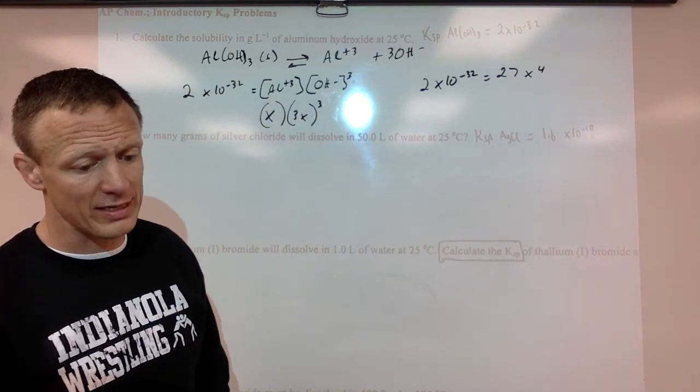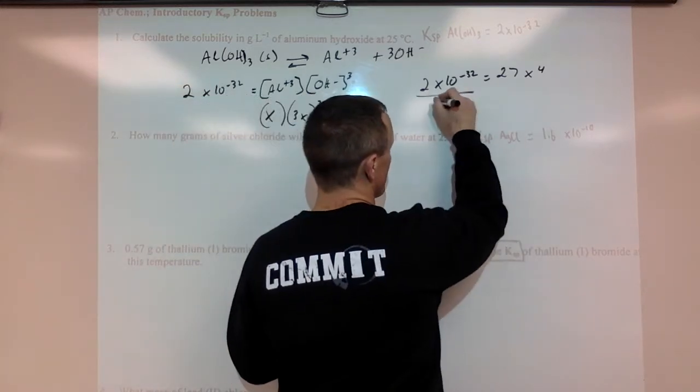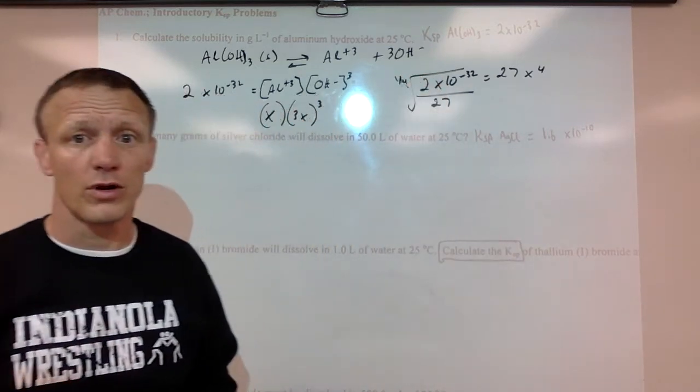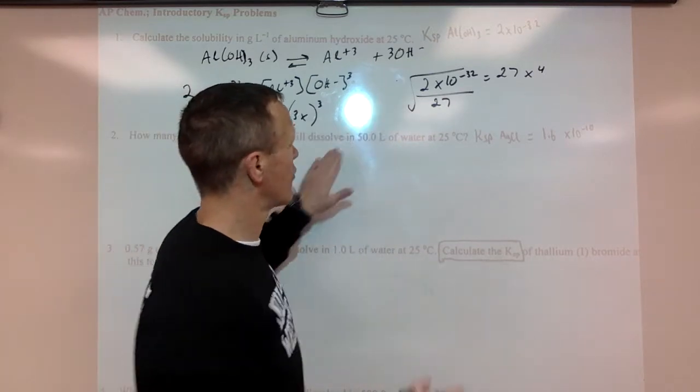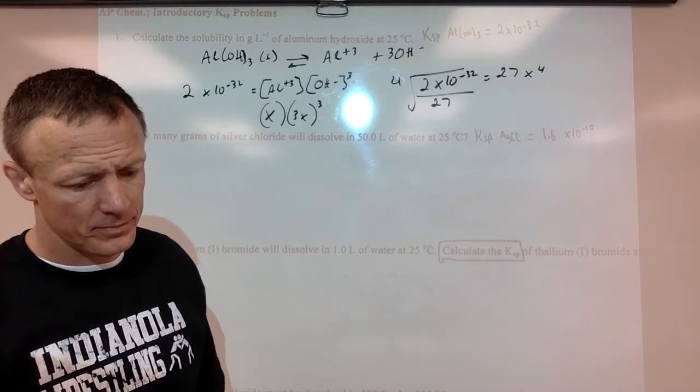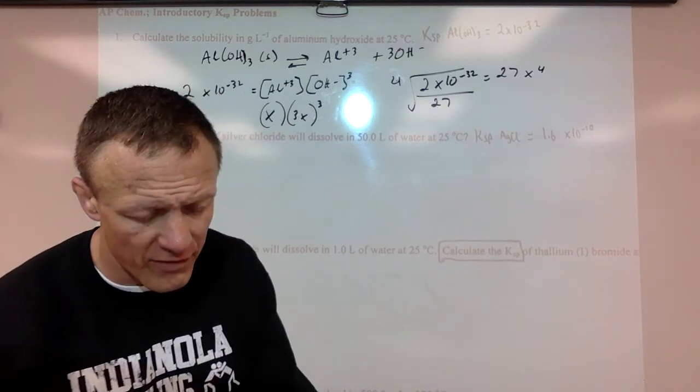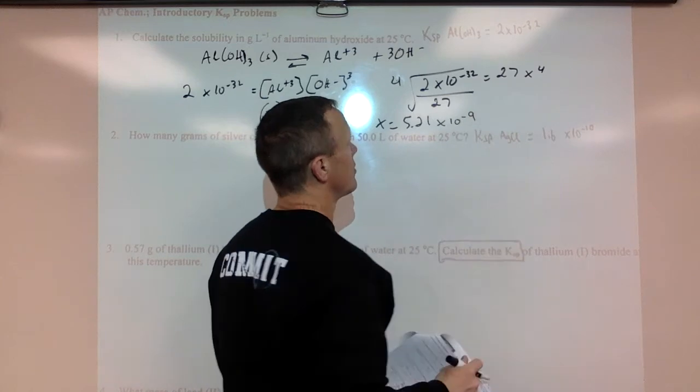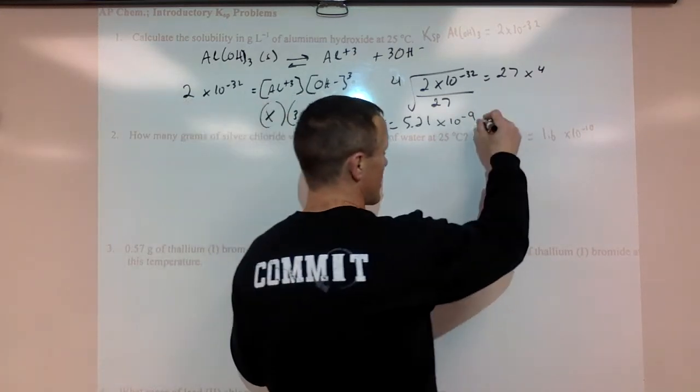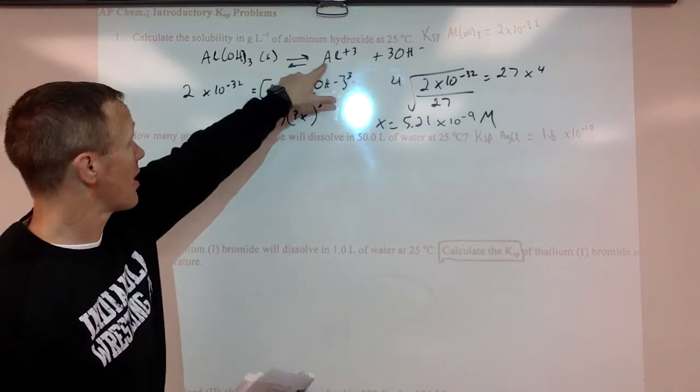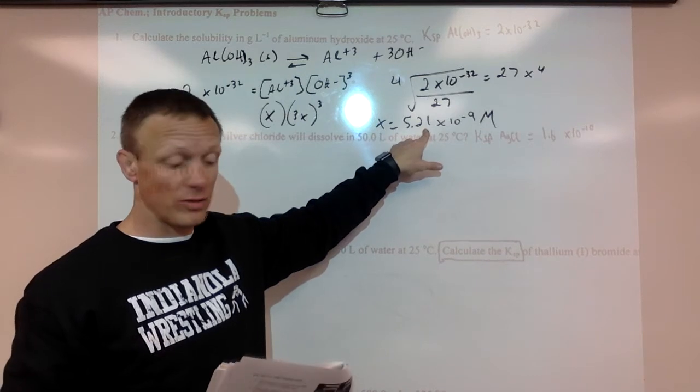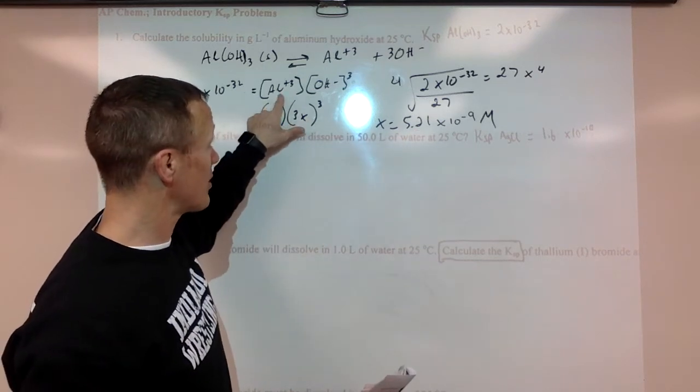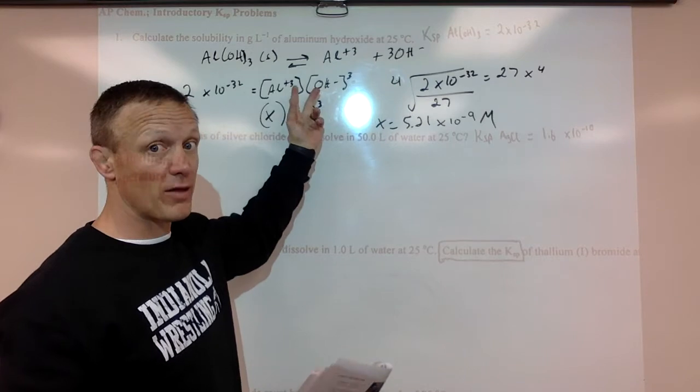So we have 2 times 10 to the negative 32nd equals 27X to the fourth. So we're going to divide by 27 and take the fourth root. So divide this by 27, take the fourth root of that. You do that, you get 5.2 times 10 to the negative 9. So remember, that is a concentration. It's really the concentration of aluminum ions. That's what X is. But for every mole of aluminum ions, there's a mole of this compound. So it's also the concentration of aluminum hydroxide. So here's your molarity. That is the maximum amount that you can dissolve.